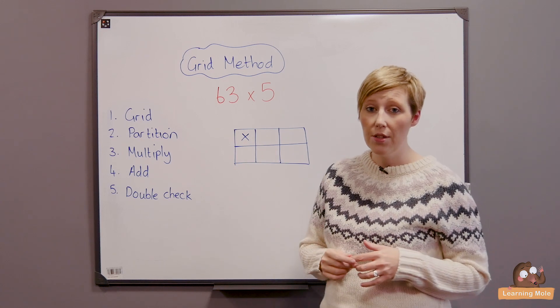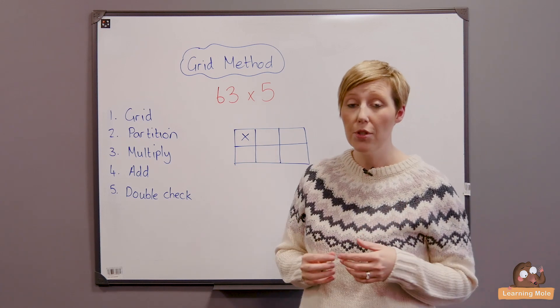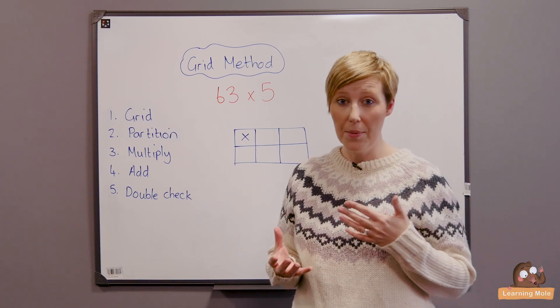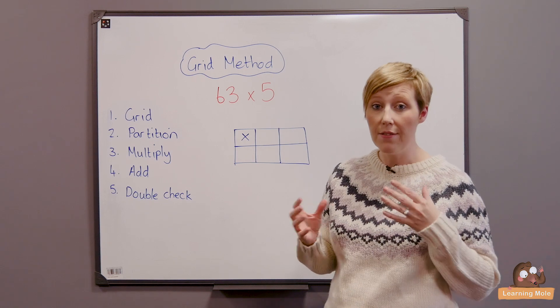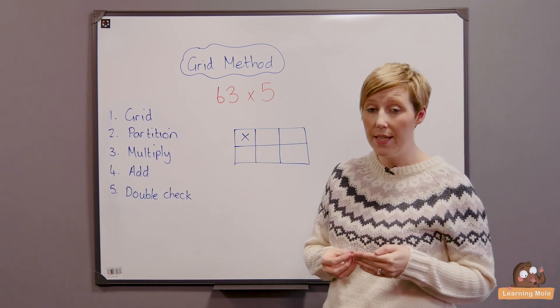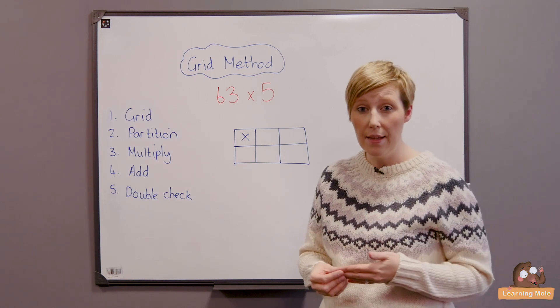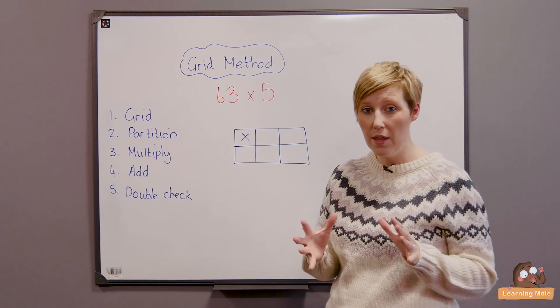Now the grid method is a really good step, a prelude to that formal written short multiplication. The beauty with the grid method is that it really lays out all the different steps and the children can clearly see what they're doing. They can understand the place value and it becomes a really good visual method.